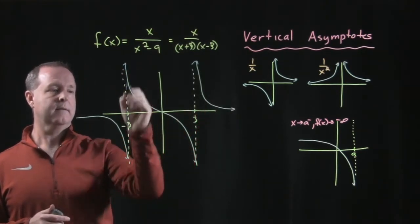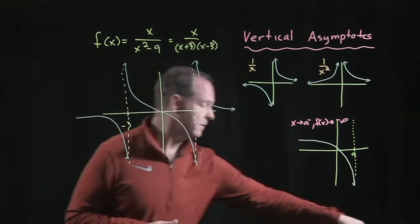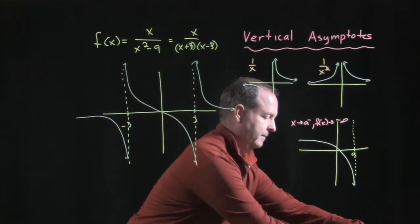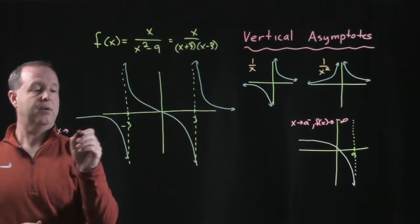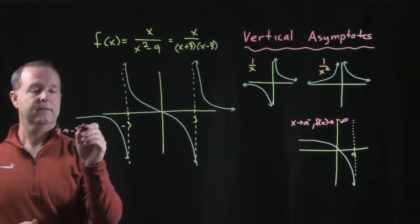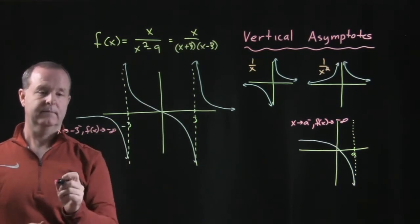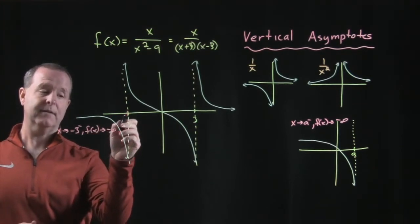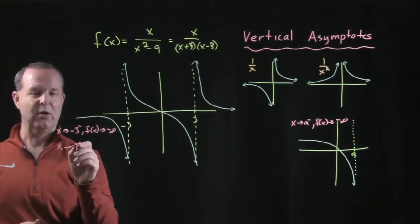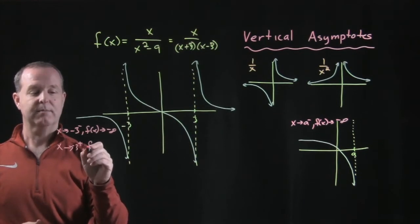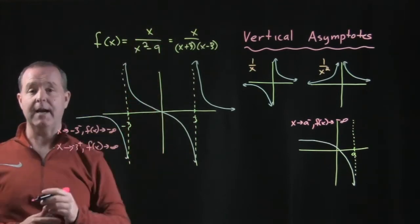So you can see that as my values of x approach negative 3 from the left, my value of the function approaches negative infinity. As I get closer and closer to negative 3 from the left, my value dives. However, as I approach negative 3 from the right side, what's my value doing? It's approaching positive infinity. So as I approach negative 3, my value is skyrocketing.